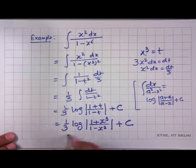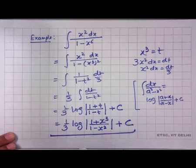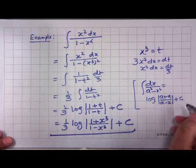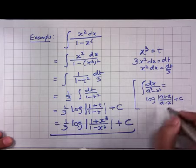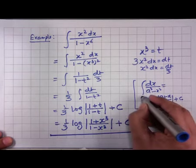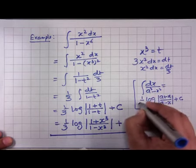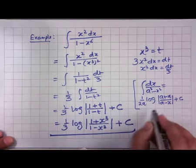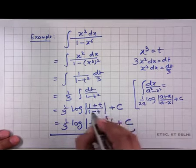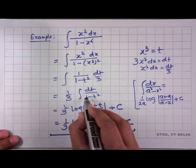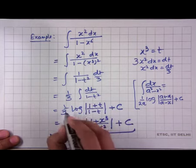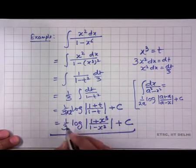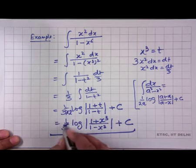So the integral I comes out to be (1/6)log|(1+x³)/(1−x³)| + C. I should note that I missed the factor 1/(2a) earlier — since a = 1, this makes the coefficient 1/(3×2) = 1/6.